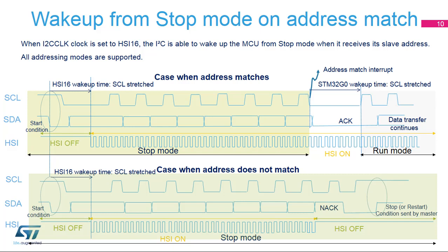The I2C peripheral supports wake-up from stop mode on address matches. The I2C peripheral clock must be set to the HSI or CSI oscillator, and only the analog noise filter is supported when the wake-up from stop feature is enabled. All addressing modes are supported. When the device is in stop mode, the high-speed internal oscillator is switched off. When a start condition is detected, the I2C peripheral enables the high-speed internal oscillator, which is used to receive the address on the bus.